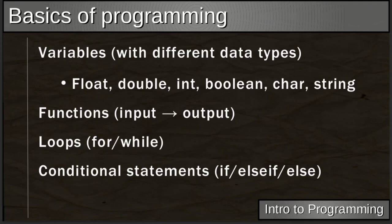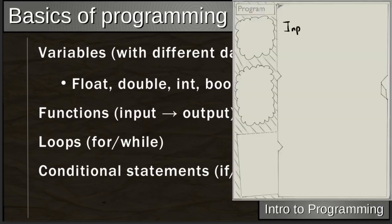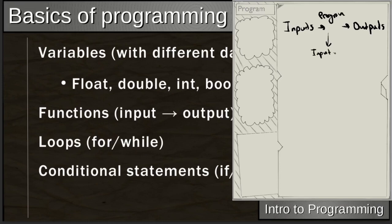In addition to variables, we have functions. Functions take an input and produce an output. In general, a program takes some inputs and outputs some results. When we want to perform an operation many times — for example, multiplying an input by two — we define a function: input goes in, output is input times two.